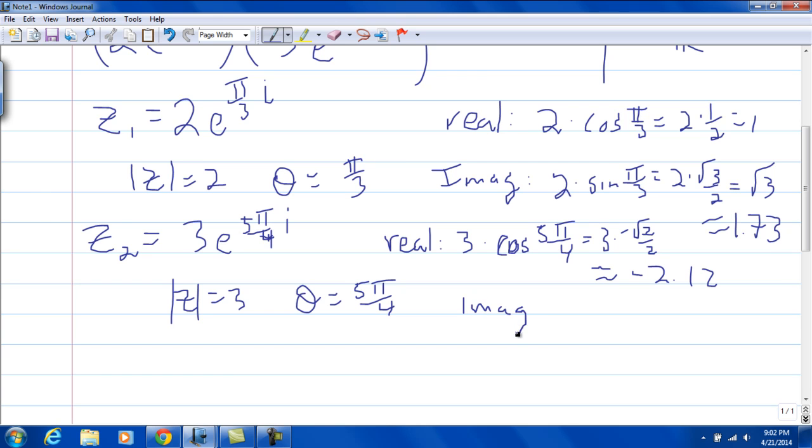And the imaginary part for this would be 3 times sine of 5 pi over 4, which will also be 3 times the negative square root of 2 over 2, which will be approximately negative 2.12.